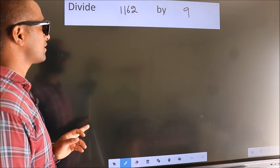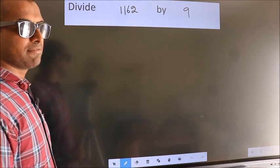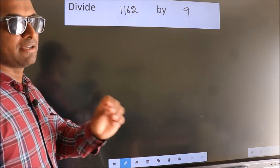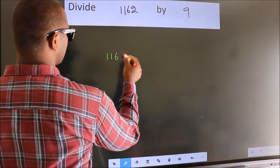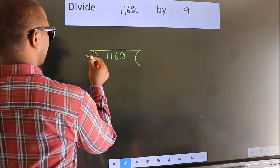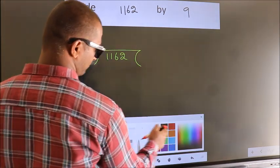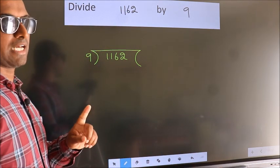Divide 1162 by 9. To do this division, we should frame it in this way: 1162 here, 9 here. This is your step 1.